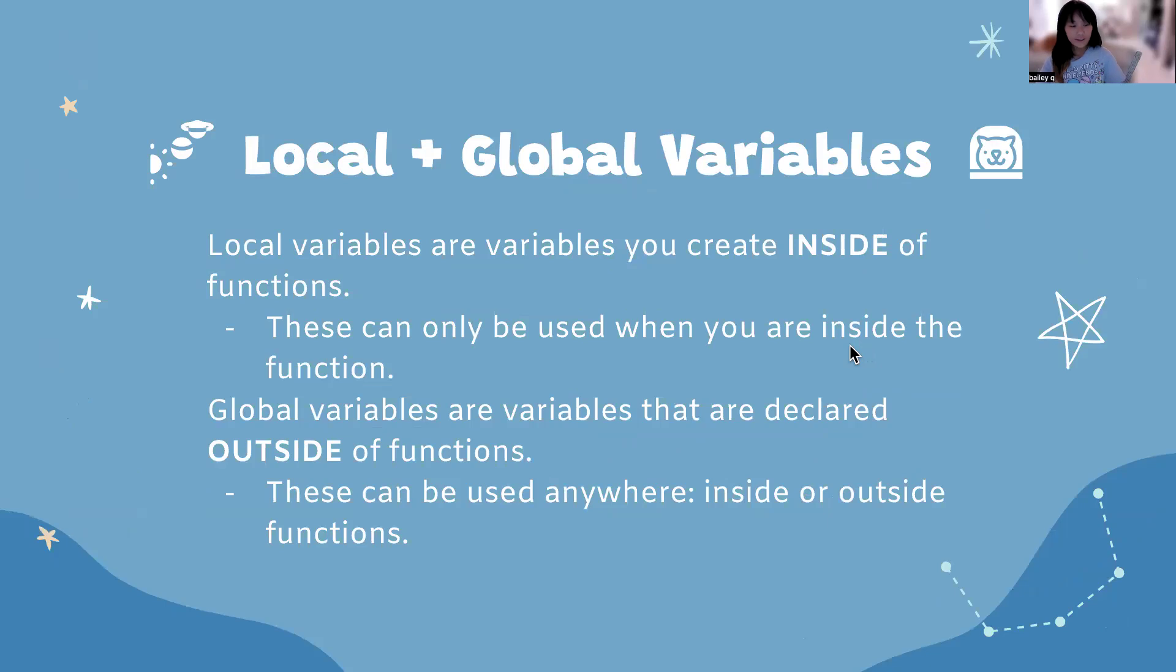We have another concept called local versus global variables. Local variables are variables you create inside of functions. Going back to our fish project number one, a local variable would be considered tail width or tail height because we declared them within our fish function. If we were to change the value of tail height or tail width or call on it outside of those curly brackets, we would get an error because they are considered a local variable.